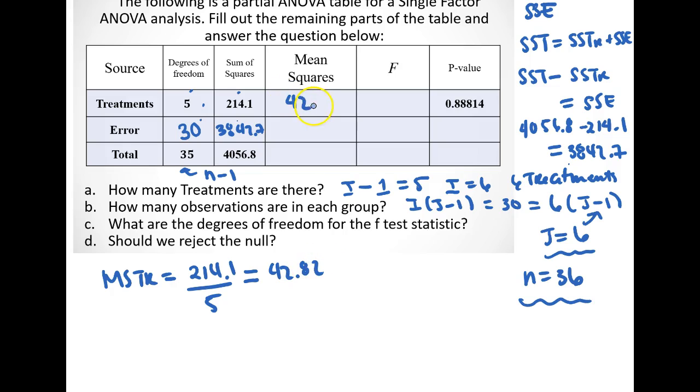So the mean square for the treatment is 42.82, and the mean squared error is going to be equal to 3842.7 divided by 30, which is equal to 128.09. So that is the mean squared error.